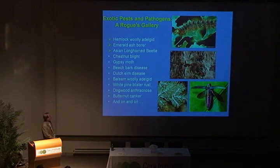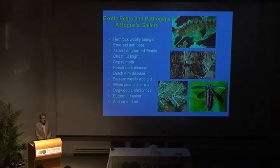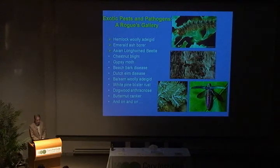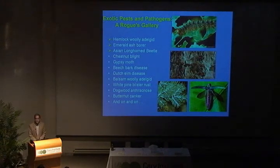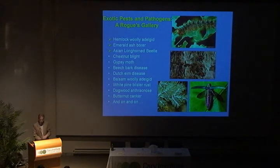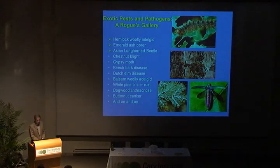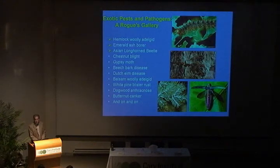There are a number of these that have been introduced over the years. Hemlock woolly adelgid is one I'm going to talk about, as well as emerald ash borer and Asian longhorn beetle. But there are others: chestnut blight, which took away one of the dominant species on the landscape; gypsy moth, introduced in the mid-1800s; beech bark disease; Dutch elm disease; balsam woolly adelgid; white pine blister rust; dogwood anthracnose; butternut canker — and we can go on and on.